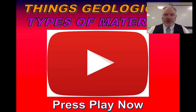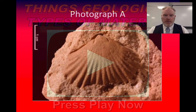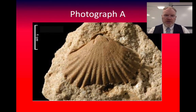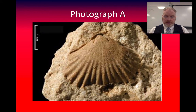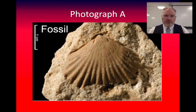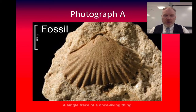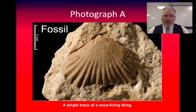Let's see what you've managed to come up with. I'm going to talk through each of these images in turn, look at what it is, and give a key reason why we've identified it as that. Photograph A is a fossil. You could say it was a sedimentary rock — it's certainly surrounded by sedimentary rock — but the main part of this image is a fossil. It's a fossil because it's a trace of a once living thing; in this case a shellfish called a brachiopod.